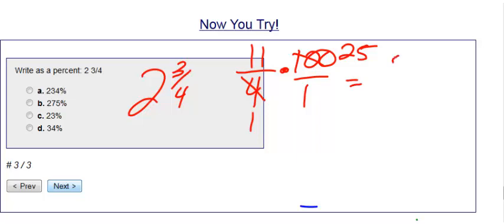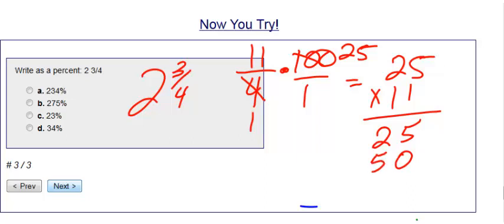Let's do that. 25 times 11. 1 times 5 is 5, 1 times 2 is 2. We're adding here, so we get 5, 7, and 2, which is 275.